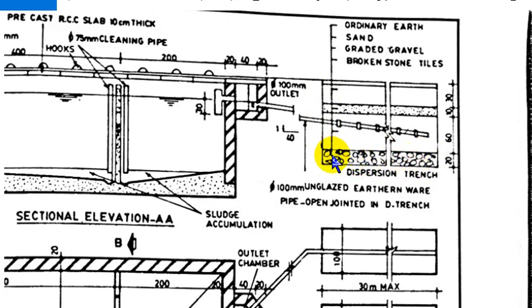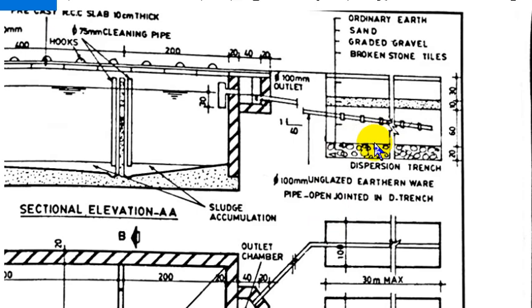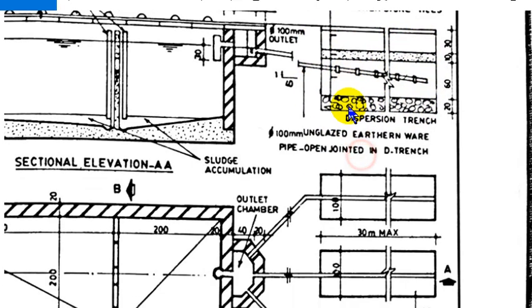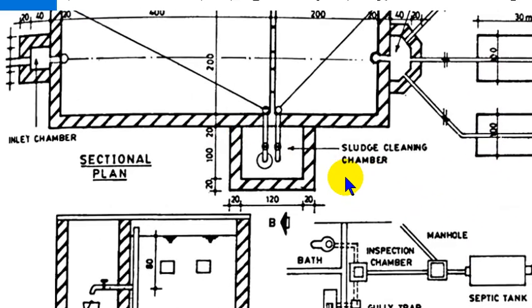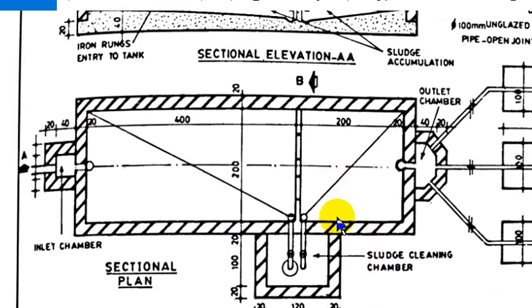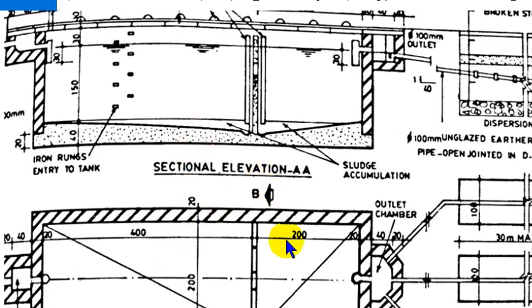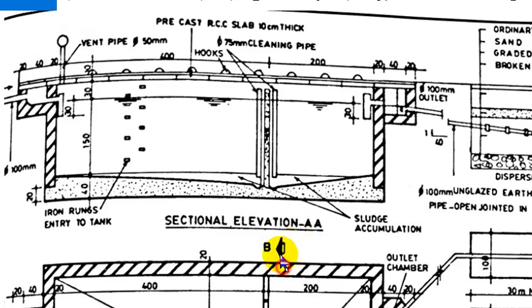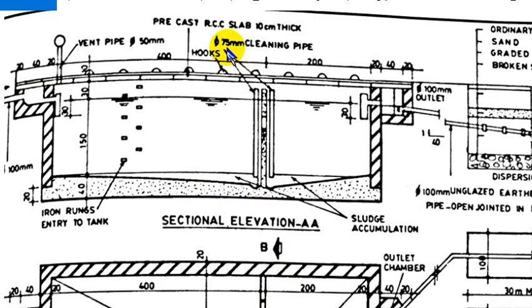We have broken stone tiles. The sand is 10 cm thick and the total thickness is 60 cm. This is a 75 mm cleaning pipe.